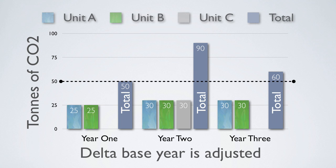As a result, the base year emissions are lowered by 25 tons — the quantity of emissions produced by business unit C in the base year. The recalculated base year emissions are now 50 tons, and Delta's emissions have risen by 10 tons relative to the base year, as opposed to the 15-ton decrease that resulted from the divestment.